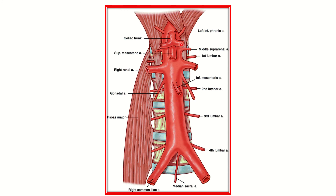Four pairs of lateral branches are present: the inferior phrenic artery, then middle suprarenal, then renal, and gonadal — so these four pairs are the lateral branches. For the posterior branches, we have the lumbar arteries — first, second, third, and fourth lumbar arteries — and the median sacral artery. So our answer is the median sacral artery, which is the posterior branch of the abdominal aorta, is most inferior, and is single.